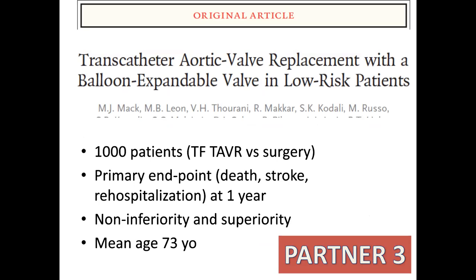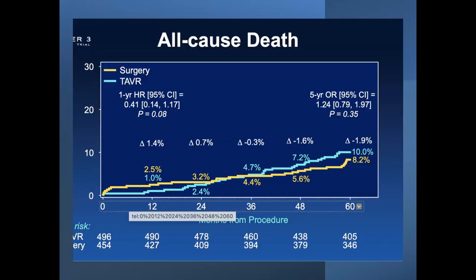With PARTNER 3, 1,000 patients were included — transfemoral TAVR versus surgery, with no alternative access. The primary endpoint was death, stroke, or re-hospitalization at one year. It was a non-inferiority and superiority trial with a mean age of 73 years old. The slides from the company presentation show that for all-cause death there's no significant difference between both groups. You can see the number of patients at five years.